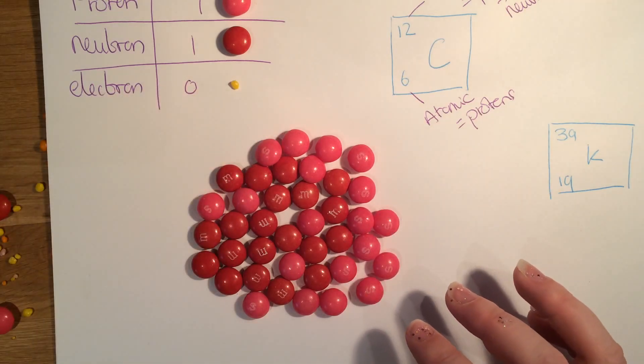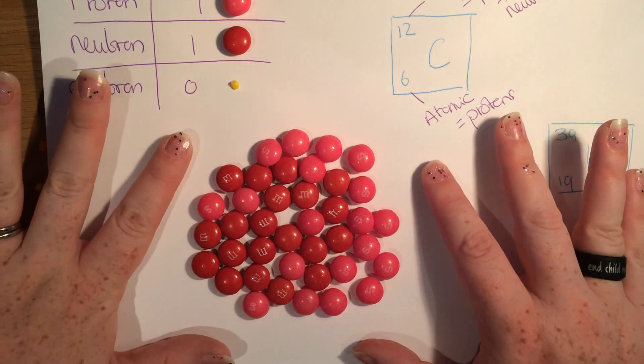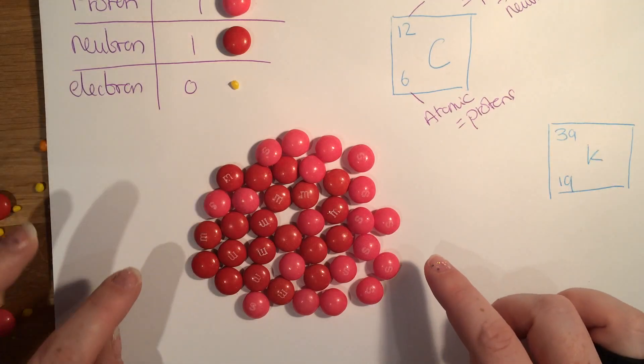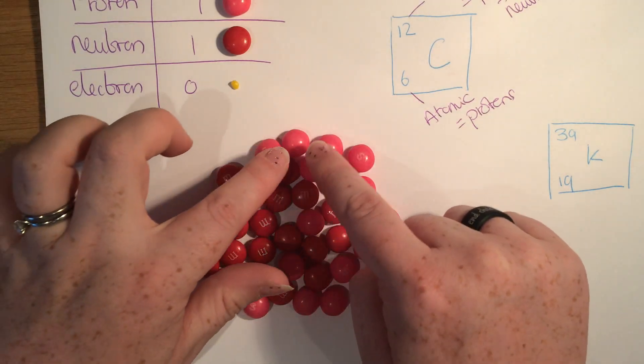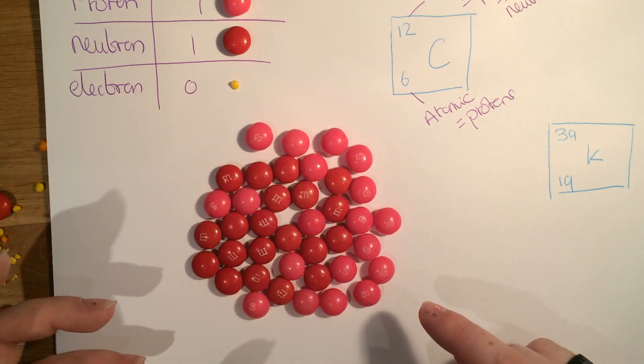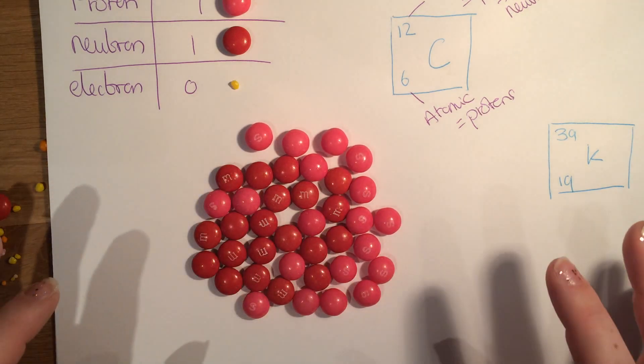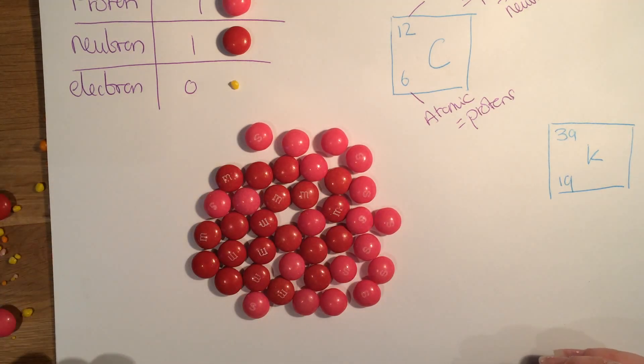This is what the nucleus looks like. Everything's about the same size. So protons and neutrons are the same size. They weigh one. And then all together, there are 39 sweets in the middle. Protons and neutrons look very similar but are completely different.